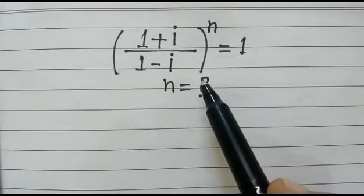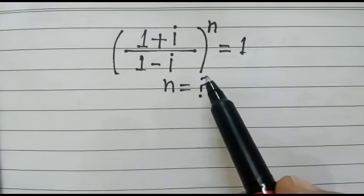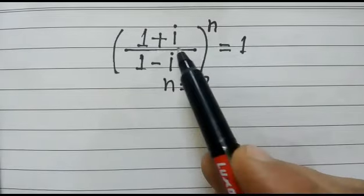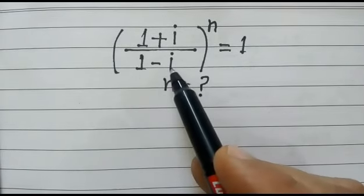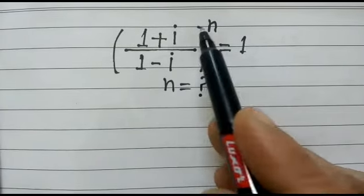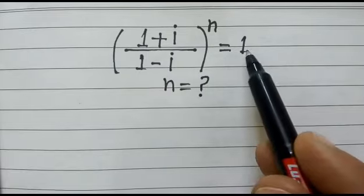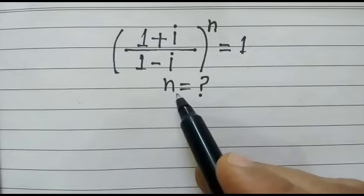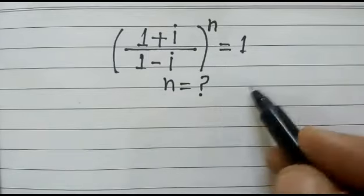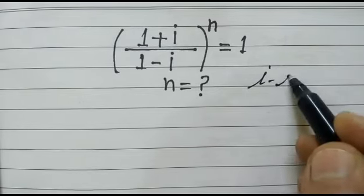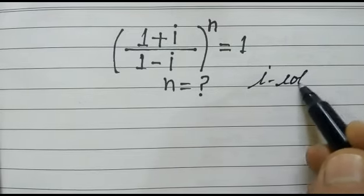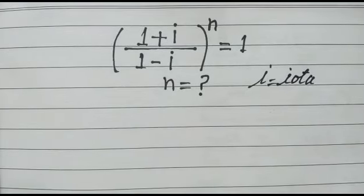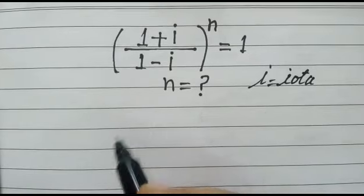Hi friends, good morning. Today we have a nice problem: (1 plus i) over (1 minus i), whole power n, is equal to 1. We have to find out the value of n, where i stands for iota. Let's start.